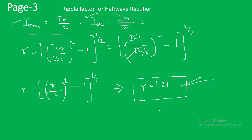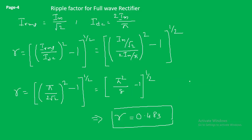Now for the full wave rectifier ripple factor, I_RMS and I_DC are derived in the lecture on full wave rectifier efficiency. For the full wave rectifier, I_RMS = I_M / √2 and I_DC = 2I_M / π — both different from the half wave rectifier values. Substituting these into equation 3, we get γ = √[(π²/8) − 1], which gives a ripple factor of 0.483.